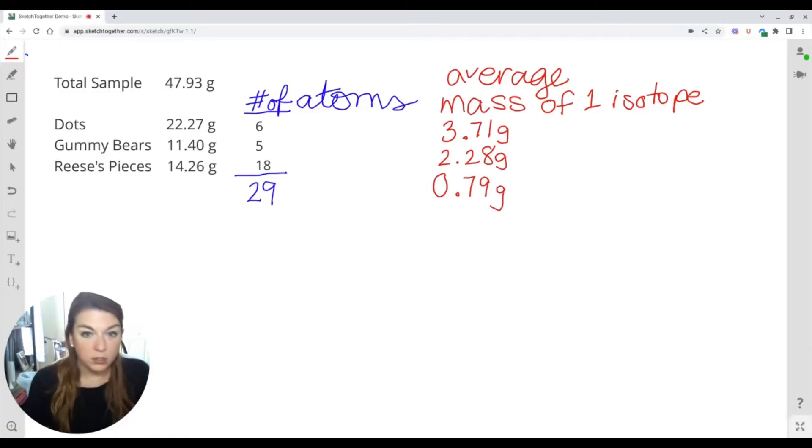And now we are going to assign each of these a mass number. So again, we're pretending that these are isotopes of an element. Its mass number is going to be its atomic mass rounded to a whole number. So when I round each of these to a whole number, this dot is going to come out at 4 grams, that's going to be its mass number. The gummy bear will be 2, and then finally the Reese's Piece would be a mass number of 1.